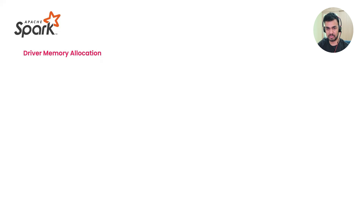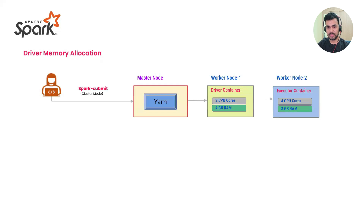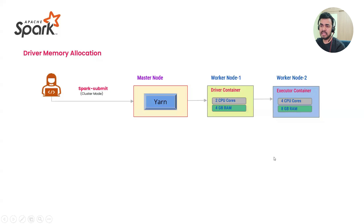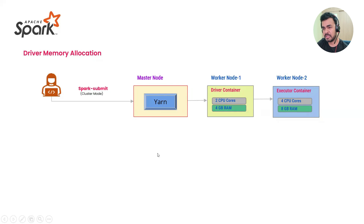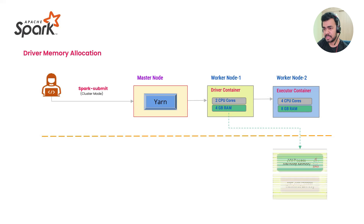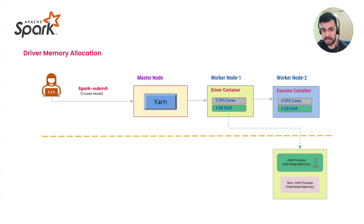Let's look at how Spark manages memories for driver and executor. When you submit an application, it goes to the master node — YARN — which executes the driver container and executor container. I've taken an example of two CPUs for each container, 8GB and 4GB respectively, just for explanation. When we assign 4GB to the driver, we need to understand two concepts: JVM heap memory and non-JVM process overhead memory.